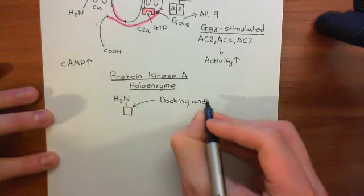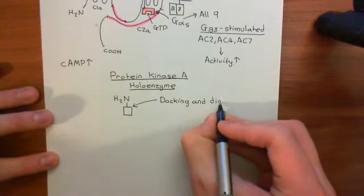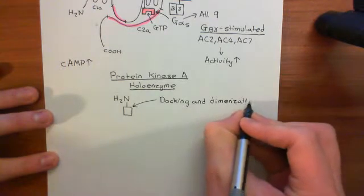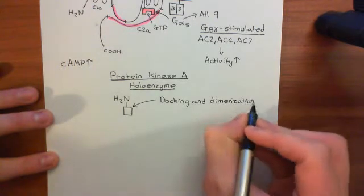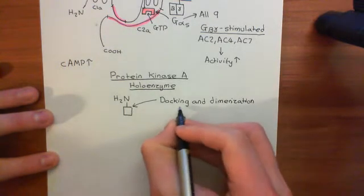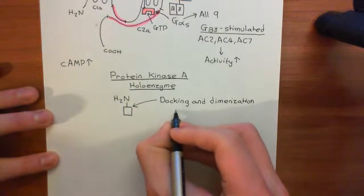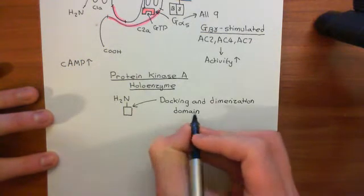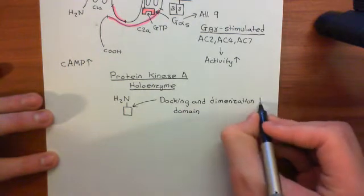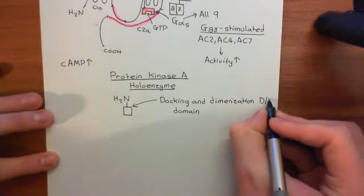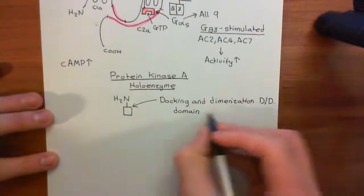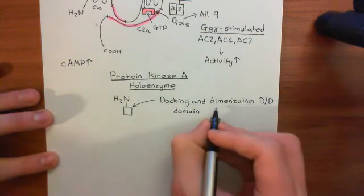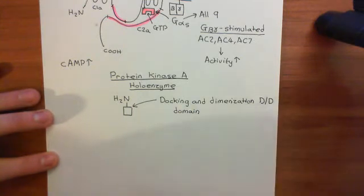The docking and dimerization domain is going to be important in docking certain protein kinase A holoenzymes to other proteins. It's also important in dimerizing the two regulatory subunits together. The docking and dimerization domain is often abbreviated to D/D domain.